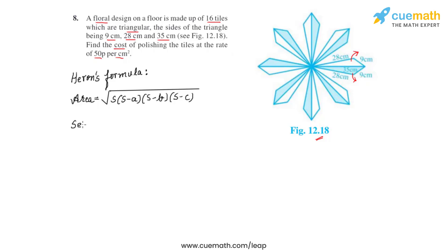So we will first have to find the semi-perimeter s, which can be found by adding up the three side lengths and dividing it by 2. So let's start adding: we add 35 plus 28 plus 9 and divide that by 2. So we get the semi-perimeter s to be equal to 36 centimeters.